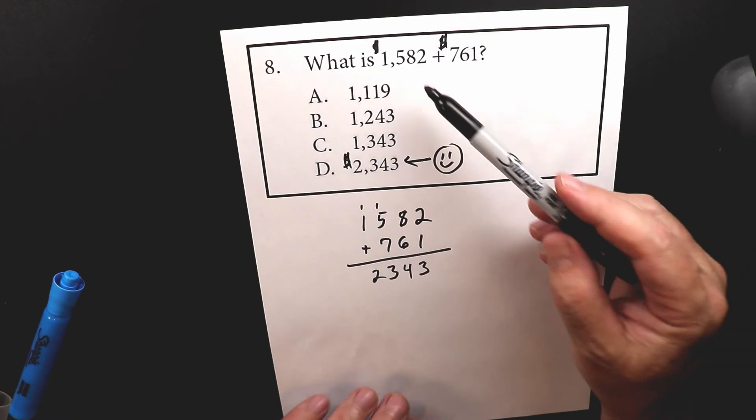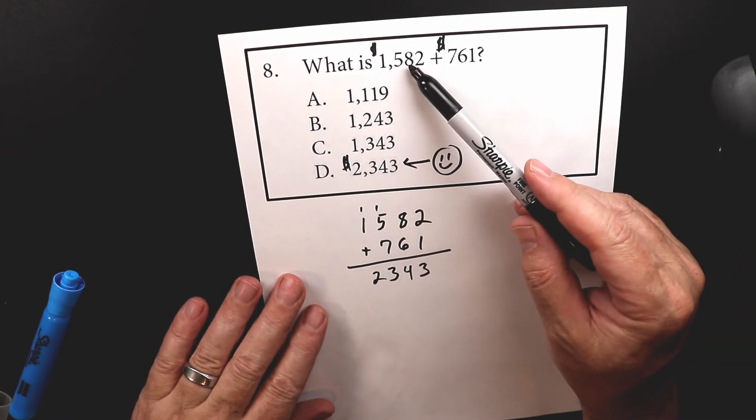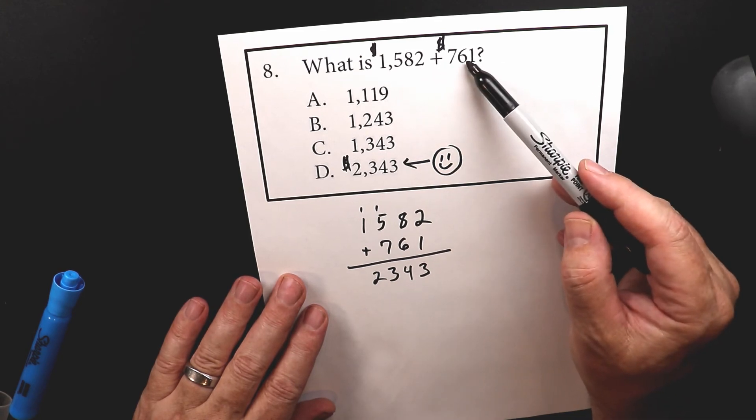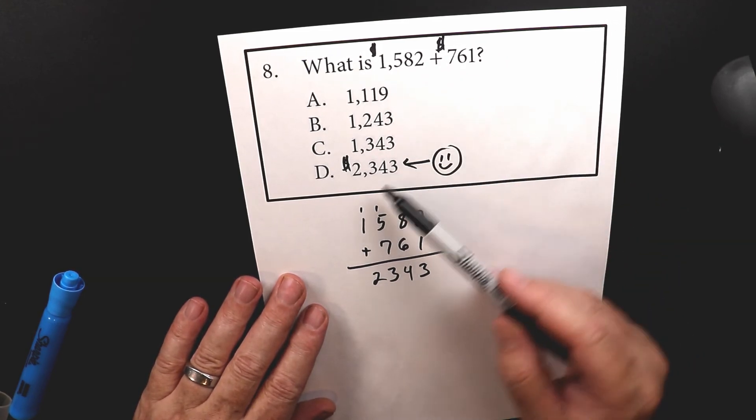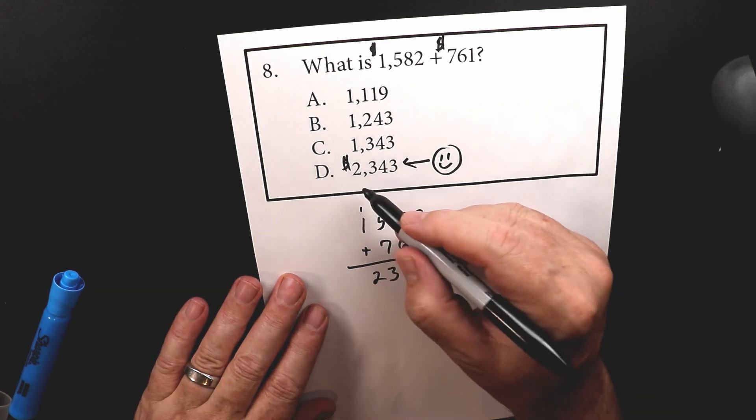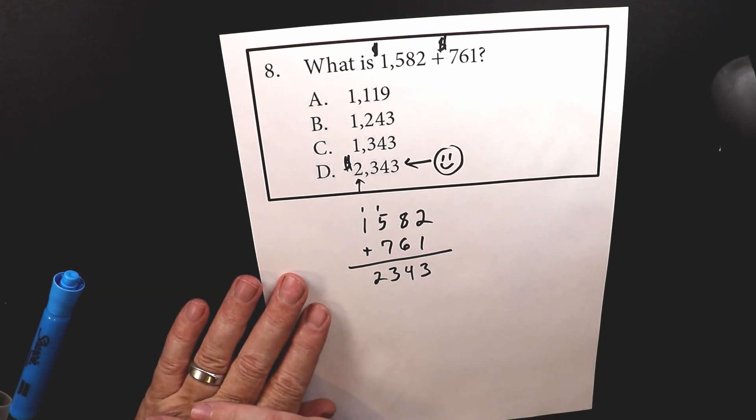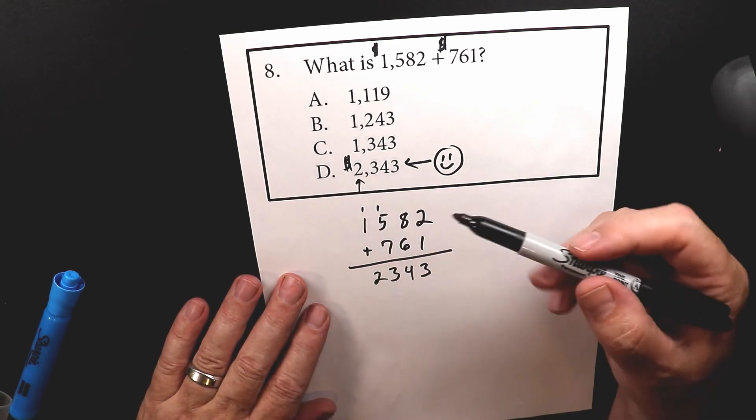So if you converted this into money, you would have seen right away that if you had $1,500, almost $1,600, and then you had $760 more, you know that's going to go over $2,000, and there's only one number that goes over $2,000, which was letter D. So that's the way you could have estimated right away and found that answer.